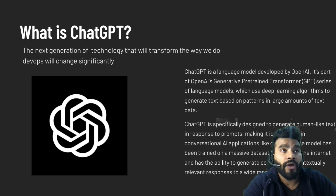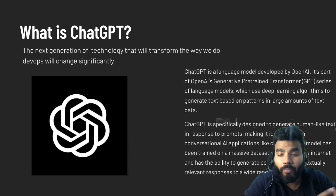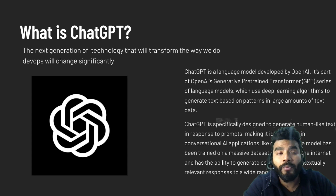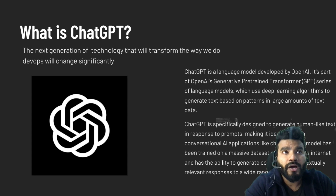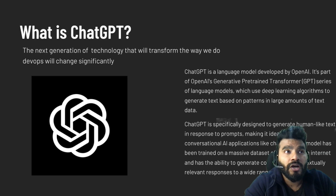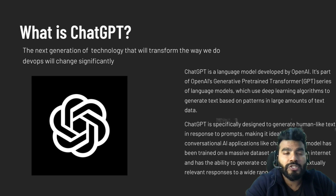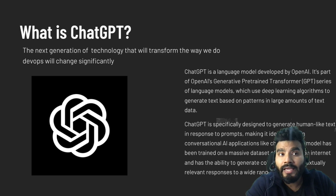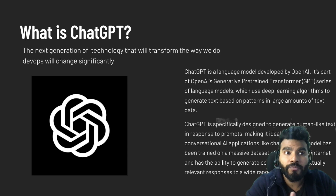ChatGPT is a language model developed by OpenAI. It's part of OpenAI's Generative Pre-trained Transformer — that's what GPT stands for. It uses deep learning algorithms to generate text based on patterns in large amounts of text data, specifically designed to generate human-like text in response to prompts, making it ideal for conversational AI applications like chatbots. The model has been trained on massive datasets and is continuously evolving.